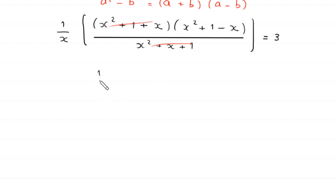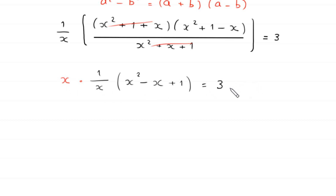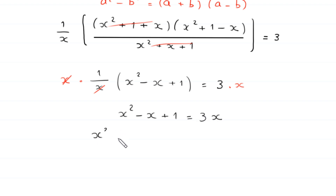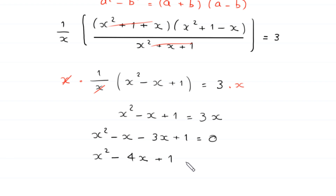We are left with (1/x) times (x² − x + 1) = 3. Multiplying both sides by x gives x² − x + 1 = 3x. Moving 3x to the left-hand side: x² − x − 3x + 1 = 0, which simplifies to x² − 4x + 1 = 0.